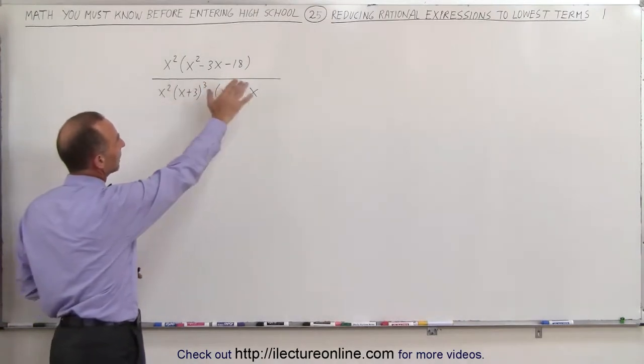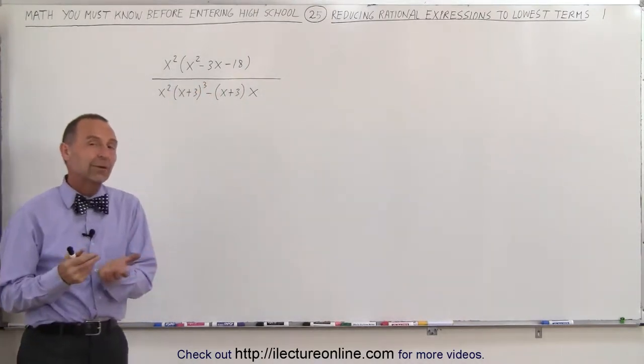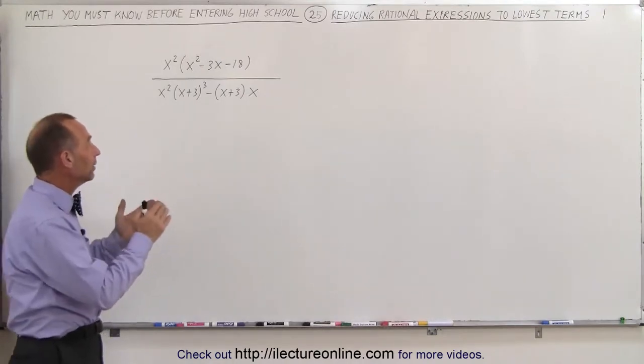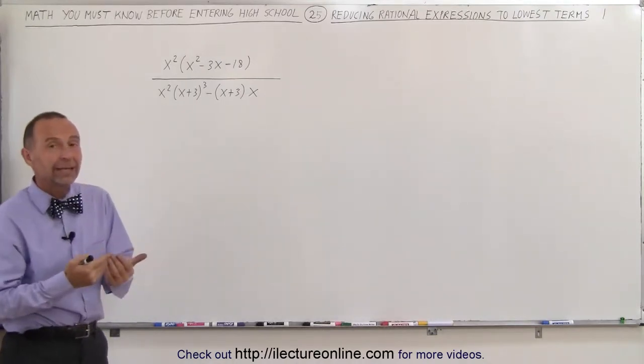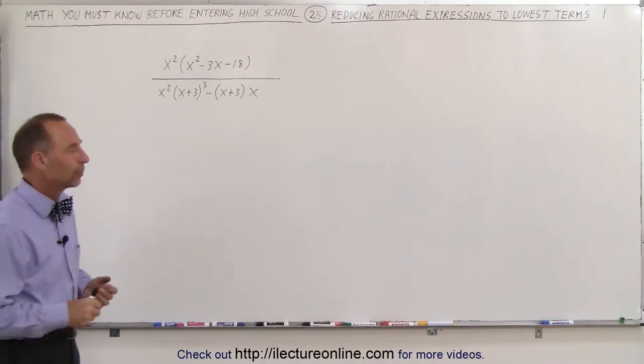Notice we have something complicated in the numerator and something complicated in the denominator. But the idea here is that we want to factor the numerator, we want to factor the denominator, and then see if there's any common factors between the numerator and the denominator that we can cancel out.